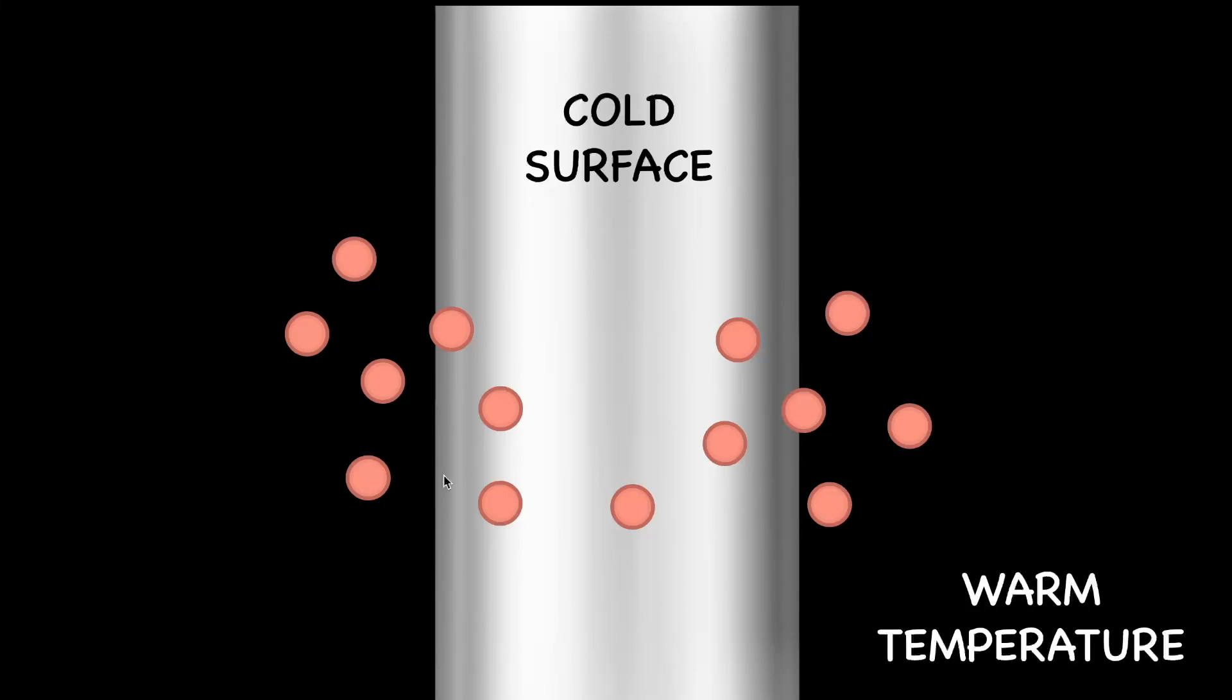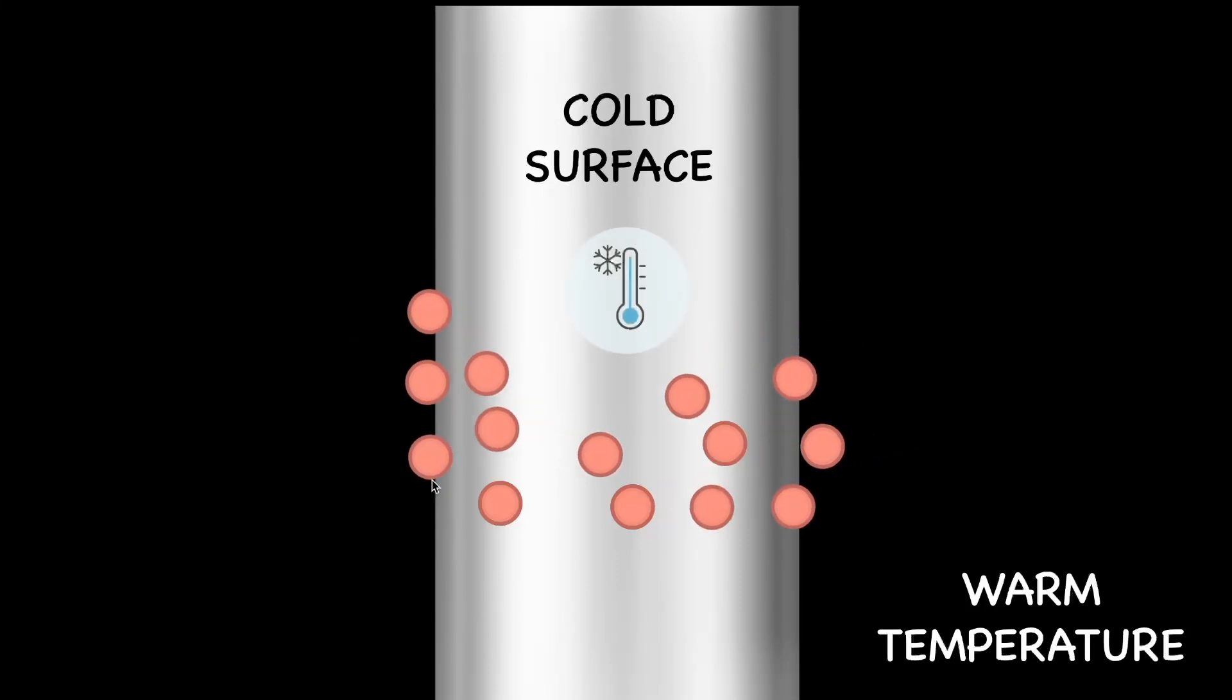There are going to be some molecules of water vapor that eventually come in contact—meaning they're touching the surface of the can—and when they touch the surface, something very interesting happens. The surface of the can is pretty cold, while compared to that, water vapor is slightly warm. When they come in contact, heat from the water vapor will get transferred to the can.